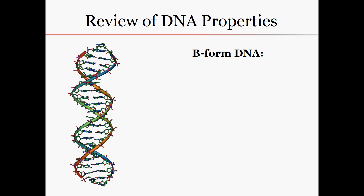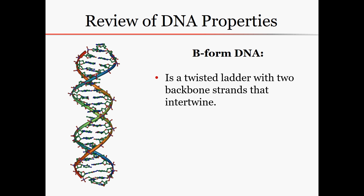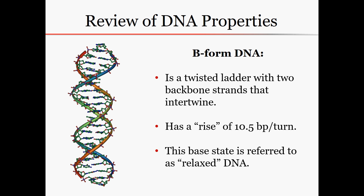First, let's review some properties of B-form DNA. As you can see, DNA is a twisted ladder with two backbone strands that intertwine. It also has a rise of 10.5 base pairs per turn. This base state is referred to as relaxed DNA, so any linear forms of DNA will maintain this rise of 10.5 base pairs per turn just through the energetics of the backbone interactions.